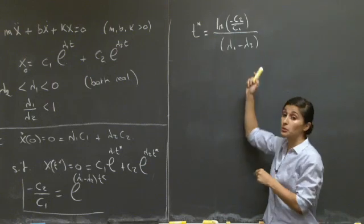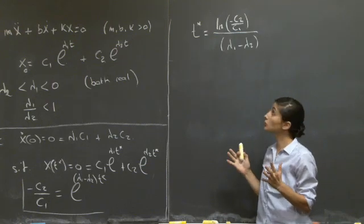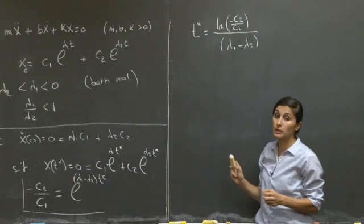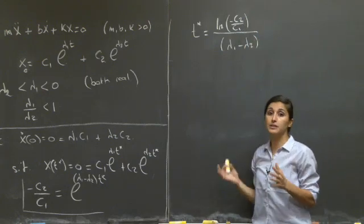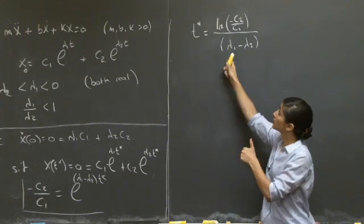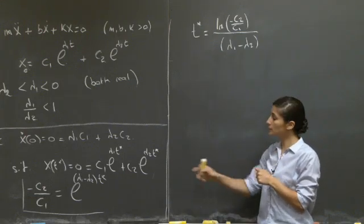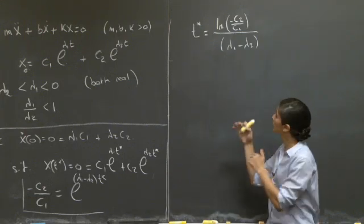This actually answers Part 2 of the question: regardless of the initial condition — regardless of the coefficients C1 and C2 — if a t-star exists, there is only one. So the system cannot cross the equilibrium position more than once.